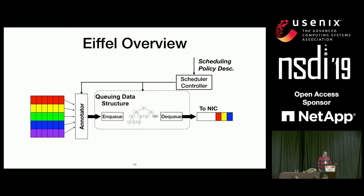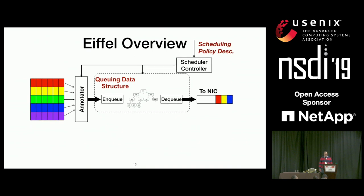Packet schedulers look something like this: flow sources send packets to an annotator that annotates packets with a rank according to the ranking function. Packets are then enqueued to a priority queue where they are ordered by rank, and sent out in order to the NIC. The annotator and queuing data structure can change according to the scheduling policy. In Eiffel, we focus on two components: the queuing data structure — where most CPU overhead is — and the scheduling policy description, which provides flexibility for diversity.